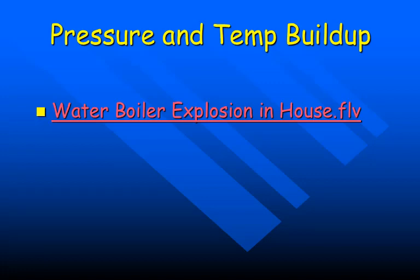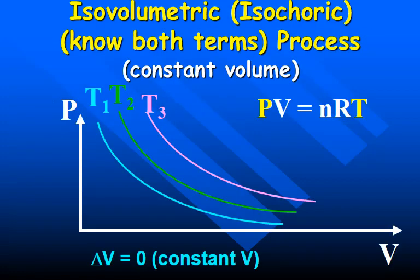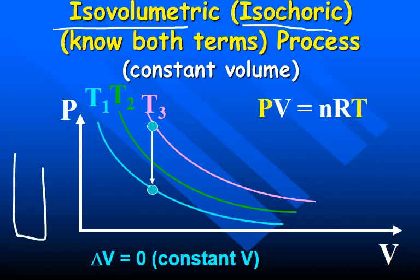If pressure is building up and temperature is increasing with fixed volume, you can have explosions. This is called isovolumetric or isochoric — both terms mean the same thing and you need to know both. With a fixed volume, if pressure is dropping, temperature is dropping (cooling). If volume is constant and temperature rises, pressure goes up proportionally.